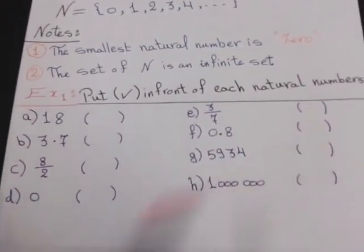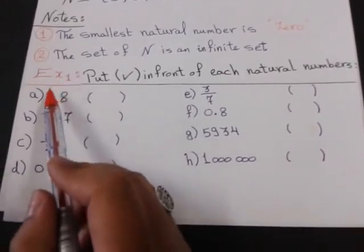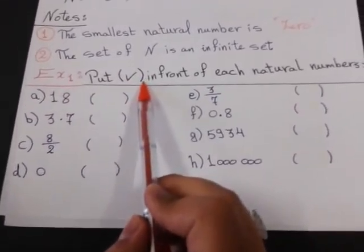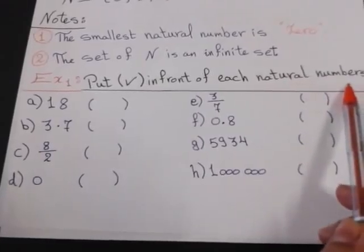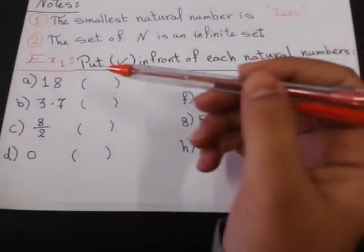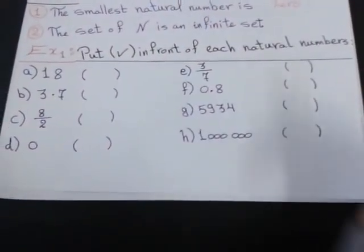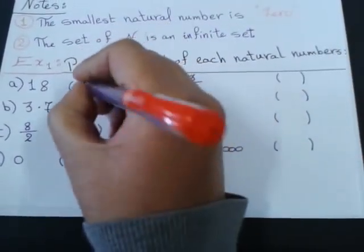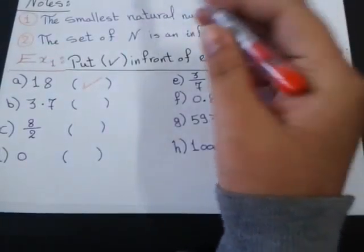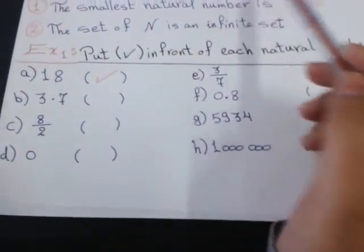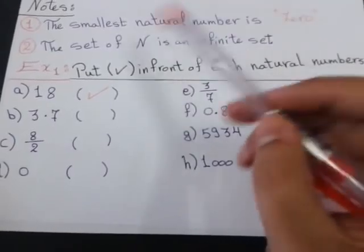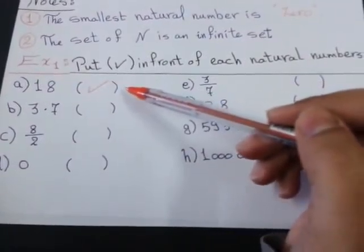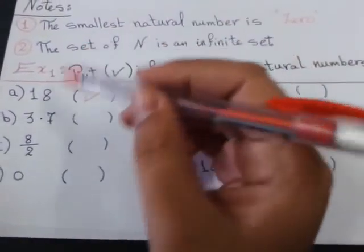Let's solve some examples on this lesson. Example number 1. Put a checkmark in front of each natural number. I want to know, is this natural or no? 18 is natural number? Yes, it's natural. Because if I complete counting, I will not stop. So, 18 is in the set of natural numbers.